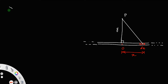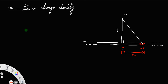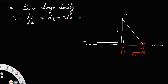Let λ be the linear charge density of the wire. Suppose dq is the amount of charge accumulated in the section dx, then we have λ = dq/dx, which implies the charge accumulated in the section dx will be dq = λ dx. Let us call that equation number 1.